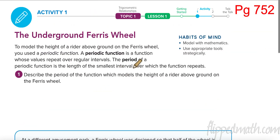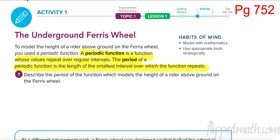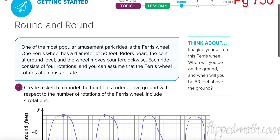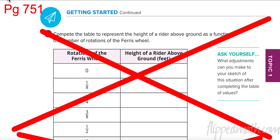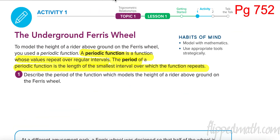On page 752 it says: a periodic function is a function whose values repeat over regular intervals. The period of a periodic function is the length of the smallest interval over which the function repeats. Going back to our graph — it goes from zero to one, one to two — so the period of this function is one rotation.